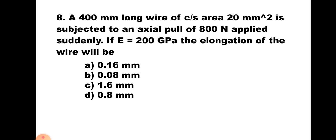Question number 8: A 400 mm long wire of cross section 20 mm² is subjected to an axial pull of 800 N applied suddenly. If E is 200 GPa, the elongation of the wire will be — A. 0.16 mm, B. 0.08 mm, C. 1.6 mm, D. 0.8 mm. The deformation δL = σ·L/E. Since the load is applied suddenly, σ = 2P/A, so δL = 2·P·L / (A·E). Substituting all values gives 0.16 mm. The correct answer is A. 0.16 mm.